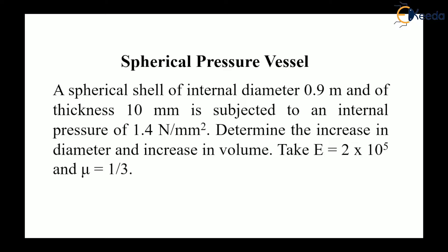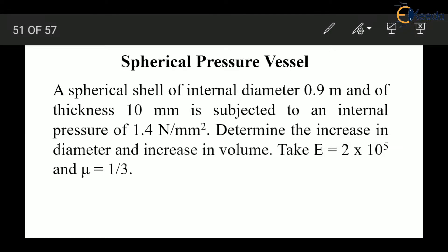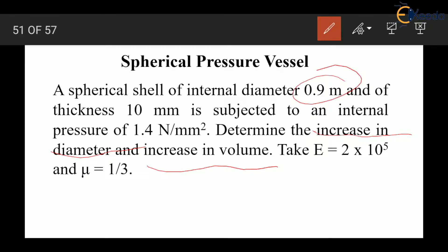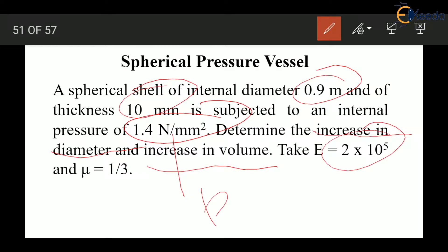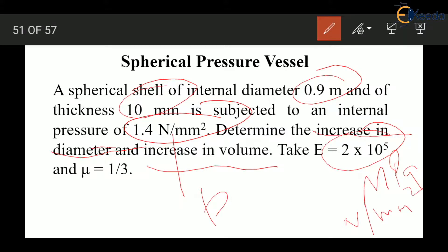This is a question of a spherical pressure vessel where we have to determine the change in diameter and change in volume. The following conditions are given: diameter is 0.9 meter, thickness is 10 millimeter, pressure applied P is 1.4 megapascal, modulus of elasticity is 2 × 10⁵ megapascal (same as Newton per millimeter square), and Poisson's ratio is 1/3.